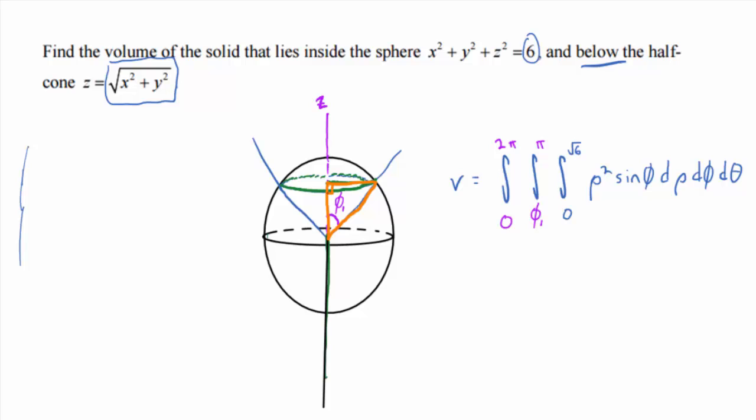So the intersection circle in green there, the points on that circle have to satisfy both the sphere and the cone. So you treat the sphere and the cone equation like it's a system of equations and solve. So in other words, I could plug z equals square root of x squared plus y squared in there and square it. And if I do that, I would get x squared plus y squared plus, well, you square the square root, you get another x squared plus y squared equals 6.